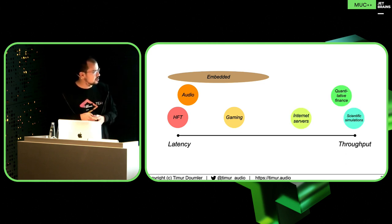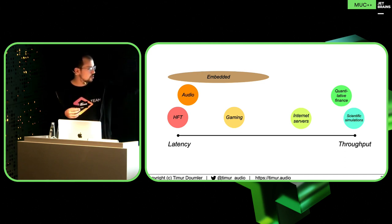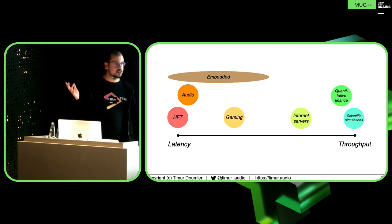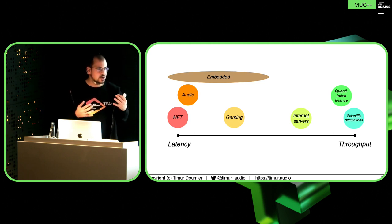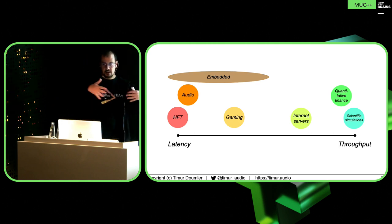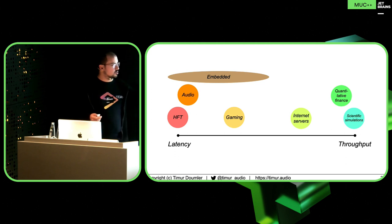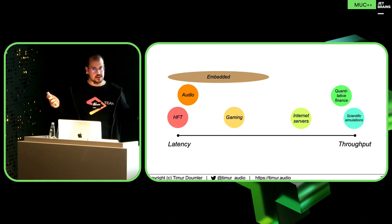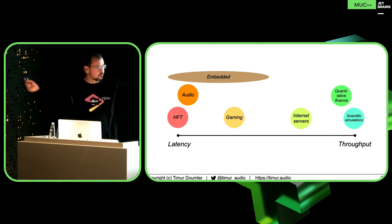There's a bunch of other applications on the other side. Probably the best example of something all the way to the right is a scientific simulation where you do a big numeric simulation and you really care about whether it's going to run three days or ten days — you want to optimize it, but you don't have a latency aspect at all. An internet server — you do care about latency but probably more about bandwidth. And quantitative finance is similar to simulation, but it's actually in the same industry as HFT — just a different application. So even if you're in the same industry, you can end up on different sides of the spectrum.